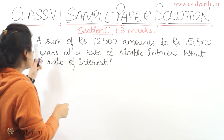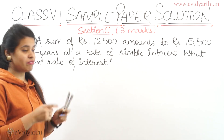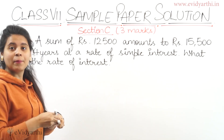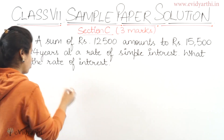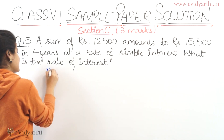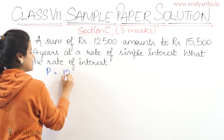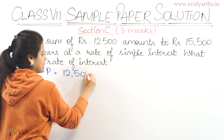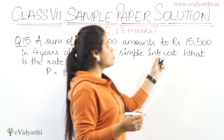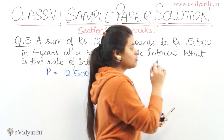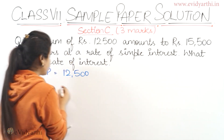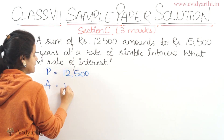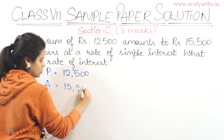A sum of rupees 12,500 — so the sum given is the principal amount. The principal given is 12,500. It amounts to rupees 15,500, so the amount given is 15,500.